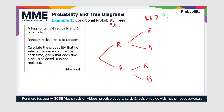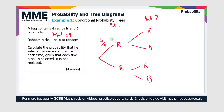Now we just need to put the probabilities on the tree diagram. As there are four red balls and five blue balls, the total is nine originally, and as there are four red balls, the chance of picking a red one will be four ninths.